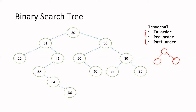Suppose a parent node has a value of 70. Its left child has to have a value smaller than 70, and its right child has to have a value bigger than 70. When it comes to in-order traversal, it starts from the smallest — left child first, then parent, then right child. This will literally return a sorted linear data structure.